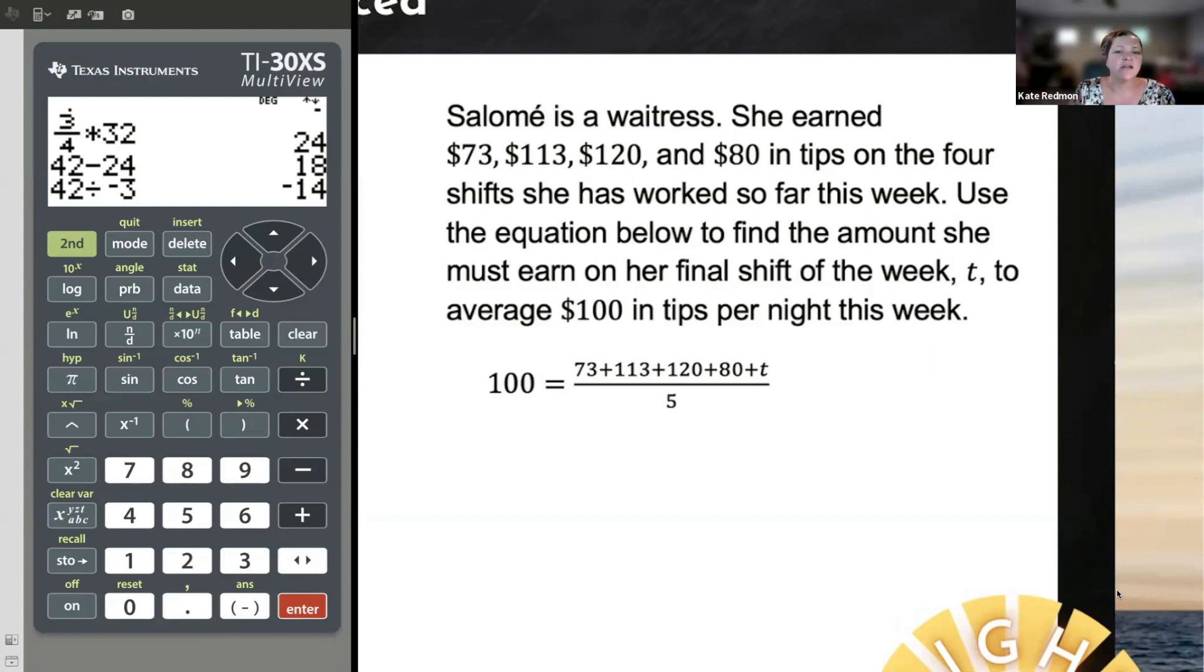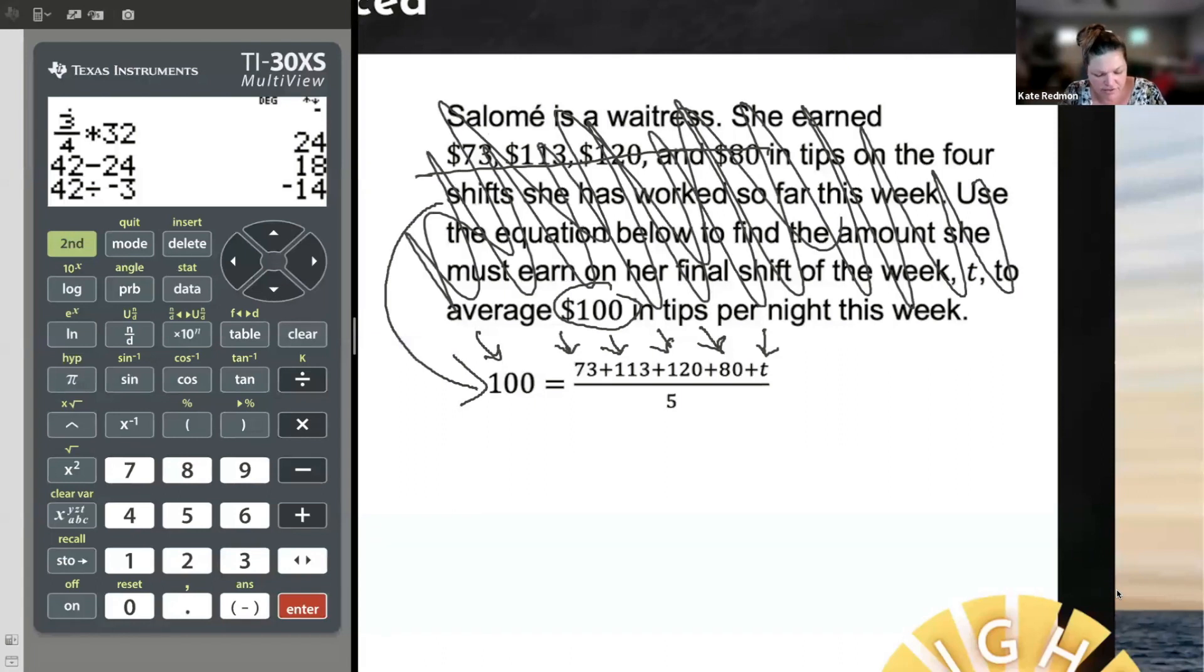Use the equation below. Oh, that's nice. Okay. I'm going to use an equation to find the amount she must earn on her final shift of the week T. Okay. They're usually telling me to use the equation to find T to average a hundred dollars in tips per night this week. And look guys, it's not even something where I have to put the numbers in all these numbers. They gave me, they already put them in. There's the hundred dollars, the 73, the 113, the 120, the 80. It's not even a word problem anymore. It's not, it's not. They surrounded it by a lot of noise, but somebody wrote the equation for you already. So now algebra just made my life easier that I didn't really have to interpret that word problem. All I have to do here is solve this equation.